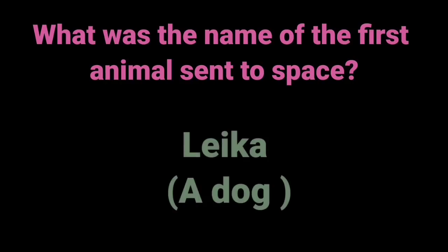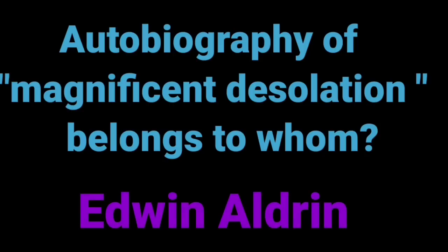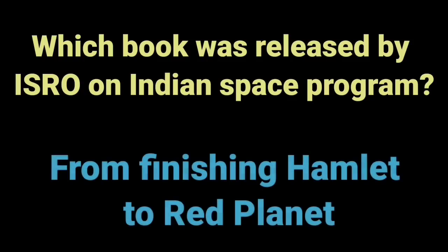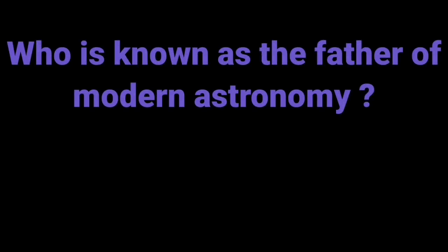What was the name of the first animal sent to space? Laika, a dog. The autobiography Magnificent Desolation belongs to Edwin Aldrin. Which book was released by ISRO on the Indian space program? From Fishing Hamlet to Red Planet. Who is known as the father of modern astronomy? Copernicus.